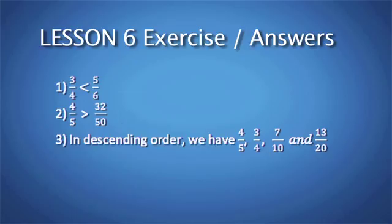Here are the answers. Number 1, 3 quarters is less than 5 over 6. Number 2, 4 fifths is greater than 32 over 50.